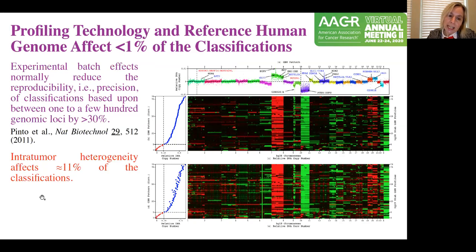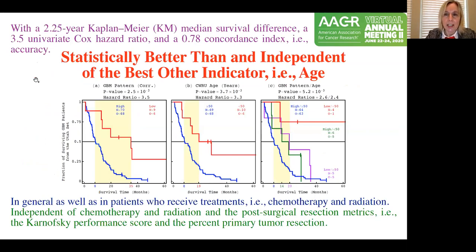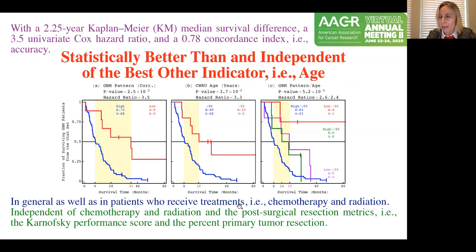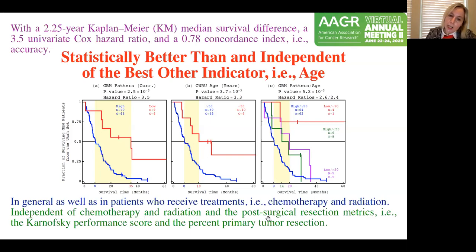Intertumor heterogeneity still affects the classification, with the effect limited to about 11%. What we saw in the trial — and also in the TCGA data — is that the predictor is statistically better than and independent of the best other indicator of GBM, which is age at diagnosis, with a concordance index of 78%. This holds in general as well as in patients who receive the standard of care of chemotherapy, mostly temozolomide, and radiation after resection — suggesting this predictor can also assess the benefit of treatment to the patient.